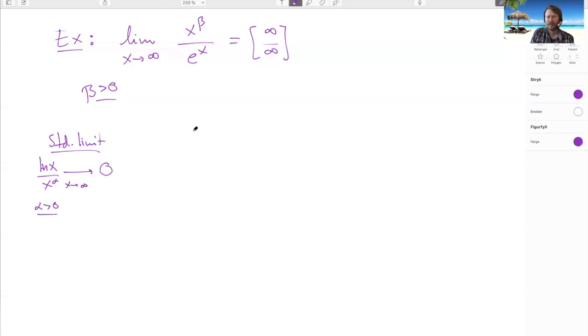So how can we use this? Well, the point was to use the change of variables here. Here we have e to the x. Let's try to see what happens if we put e to the x equal to u. Now when x goes to infinity, e to the x goes to infinity, so I can replace this by u goes to infinity like this. I have my u down here, but what is x? Well, x is equal to log u.